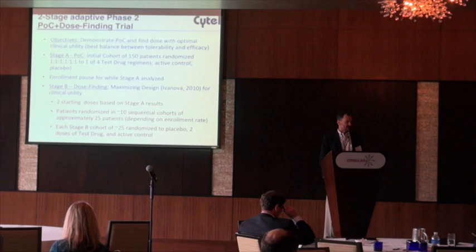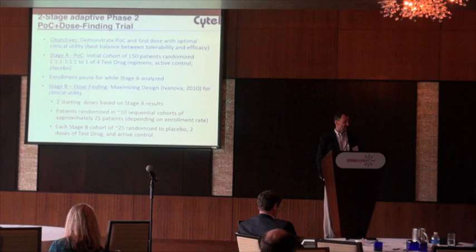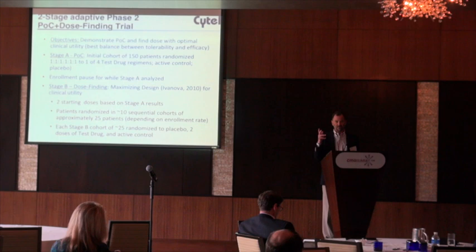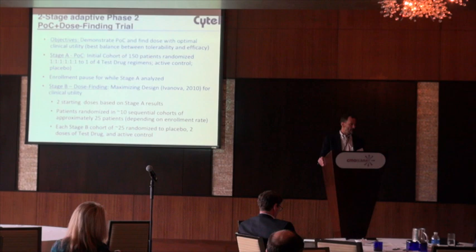We used the maximizing design published by Anastasia Ivanova in 2010 to adaptively assign doses to maximize clinical utility. This design starts with two doses chosen from stage A, and then patients are randomized in sequential cohorts of about 25, depending on enrollment rate. Each stage B cohort is then randomized to placebo, two doses, and active control, with doses for sequential cohorts selected according to the adaptive design.